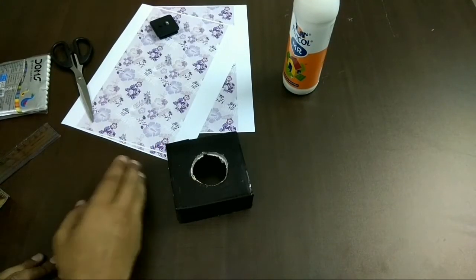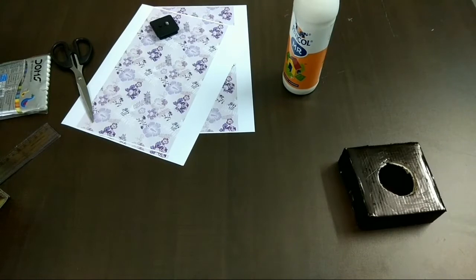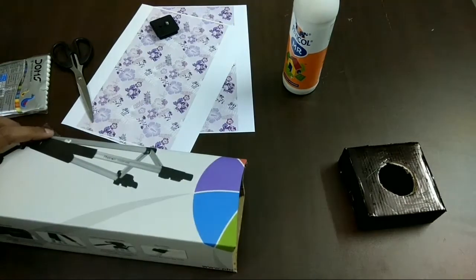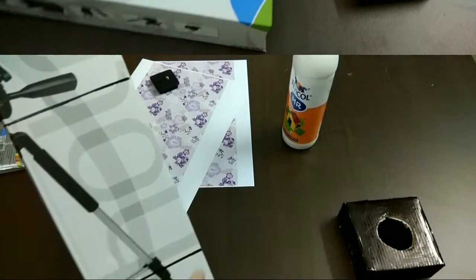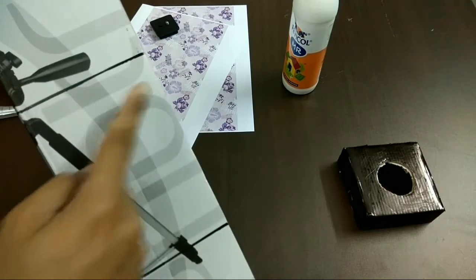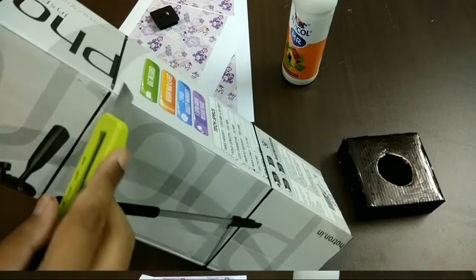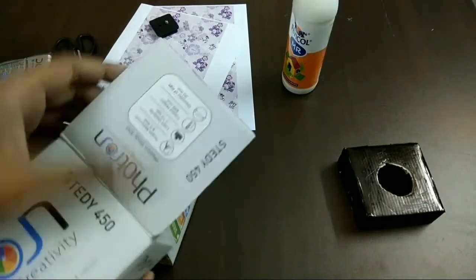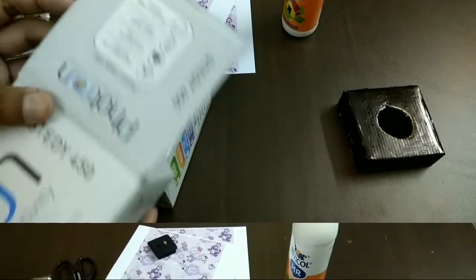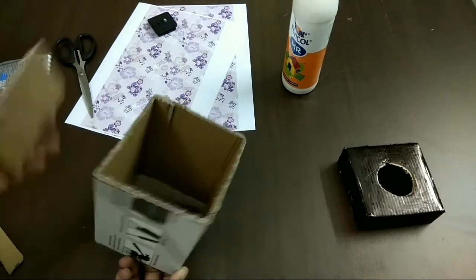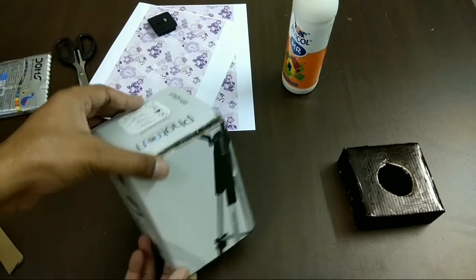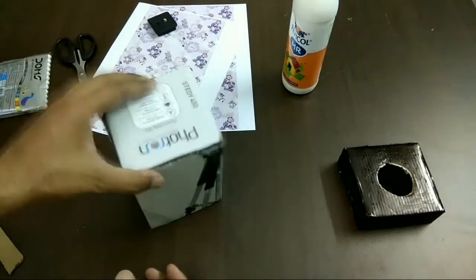Now you have to use a permanent marker, a black marker. And again for the top part of the lamp, you have to make lines across the cardboard box and you have to cut them. So once you are done cutting, it would look like this. And the top part of the cardboard box, you have to cut it out. This part would serve as the top part of the lamp.